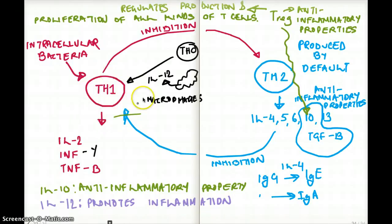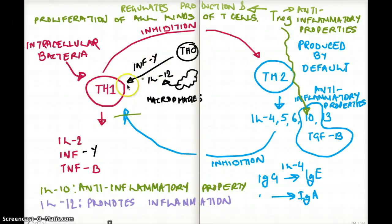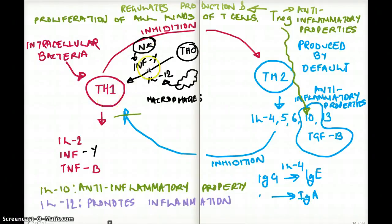There is something else which also promotes the production of T helper 1 cells, and that is interferon gamma. Interferon gamma is also produced by T helper 1 cells, so T helper 1 cell production is promoted by interferon gamma as well. But who is making this interferon gamma initially? This interferon gamma is coming from the natural killer cells. As a result, natural killer cells also promote inflammation because they stimulate interferon gamma, which stimulates more T helper 1 cells, which releases IL-2, interferon gamma, and TNF-beta. They're all linked to each other.